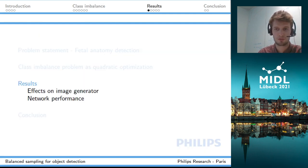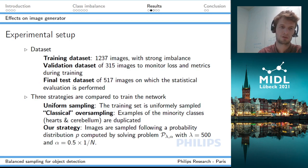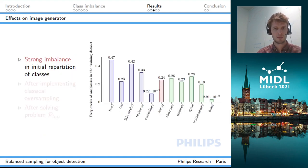Now I'm going to show the results - how it affects the image generator and also the training results. All the results I'm going to present were obtained on the final test dataset of a bit more than 500 images. I'm going to compare three methods: the first which is basically doing nothing and sampling the images uniformly in the data generator; the classical and maybe naive oversampling strategy I described before where we duplicate the minority classes; and our strategy where we sample the images by solving this optimization problem.